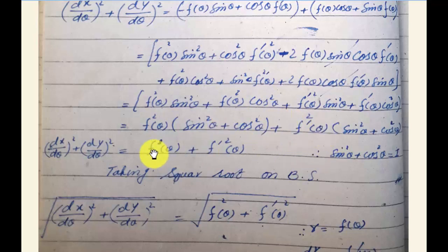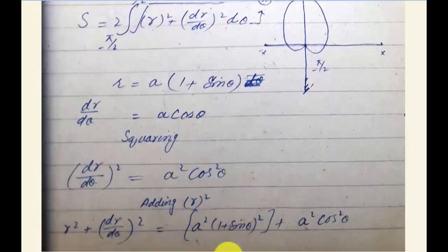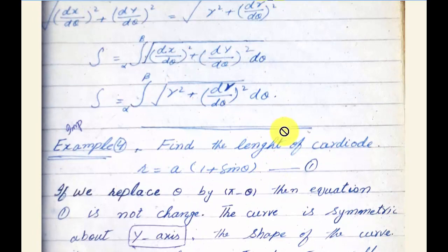When you simplify, you get f²(θ) + [f'(θ)]². Taking the square root on both sides, where r = f(θ) and dr/dθ = f'(θ), we get (dx/dθ)² + (dy/dθ)² = r² + (dr/dθ)².